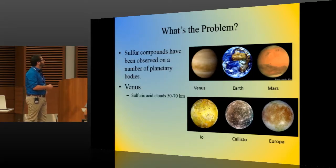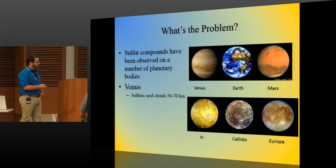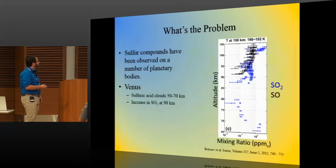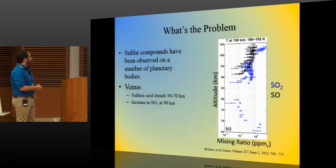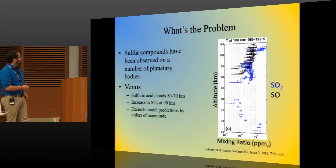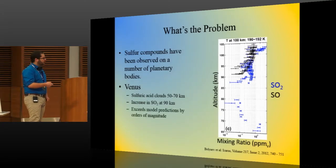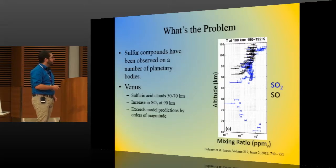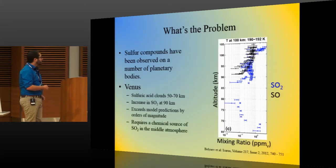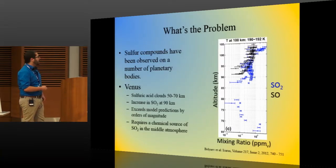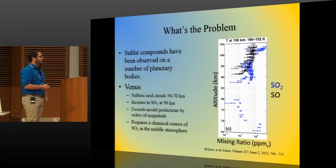Where we have these sulfuric acid clouds from 50 to 70 kilometers through the atmosphere. But once you get above those clouds, starting at about 90 kilometers, there's this massive increase in SO2 concentration. And these increases in SO2 really exceed any model predictions by orders of magnitude, two or three orders of magnitude. And so what this really is suggesting is that there's some sort of chemical source of SO2 in the middle atmosphere of Venus that we don't know about.